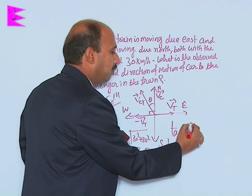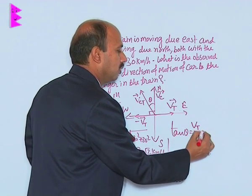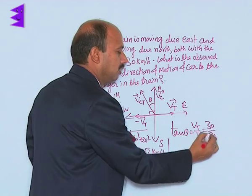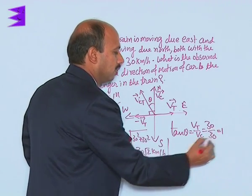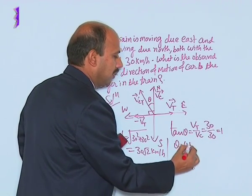This is your Vt upon Vc, that is 30 divided by 30, so equal to 1. So theta is equal to 45 degrees.